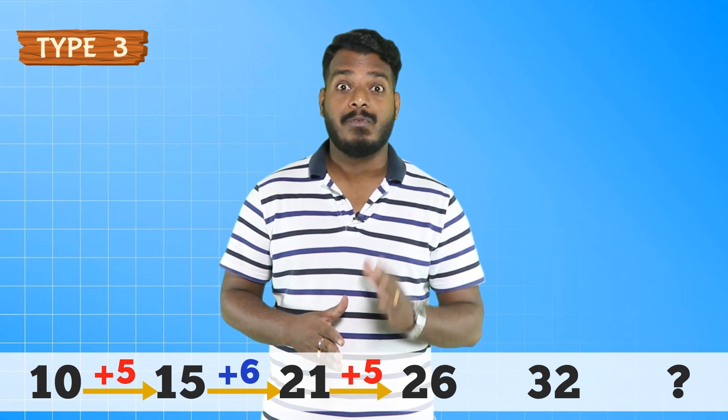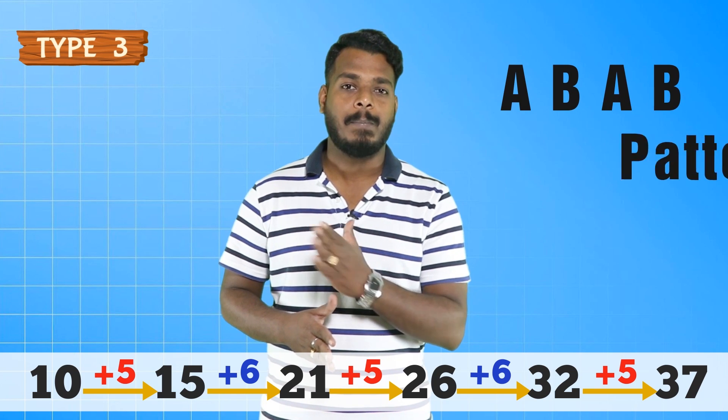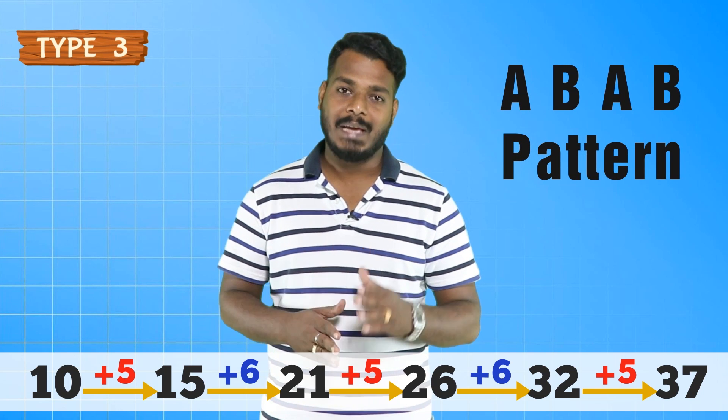Type 3 — have a look at the series: 10, 15, 21, 26, 32, question mark. The difference between the first two numbers is 5, the next difference is 6, the next is 5 again — it's getting repeated. The next difference is 6. So the pattern is 5, 6, 5, 6. The next difference would be 5 again. Your answer should be 32 plus 5, that is 37. This pattern is called the ABAB pattern because only two numbers get repeated over the series.